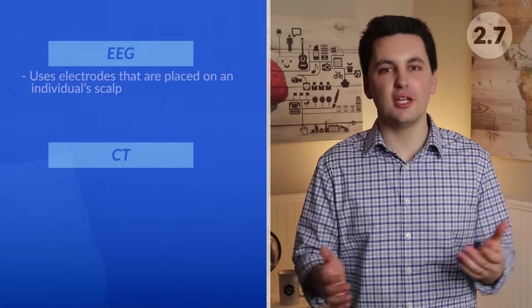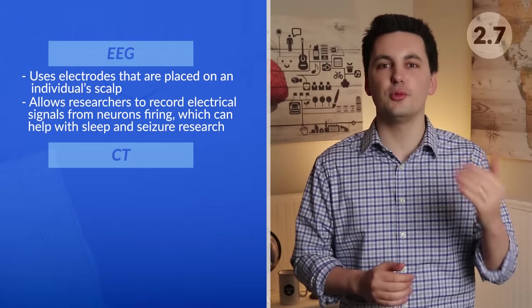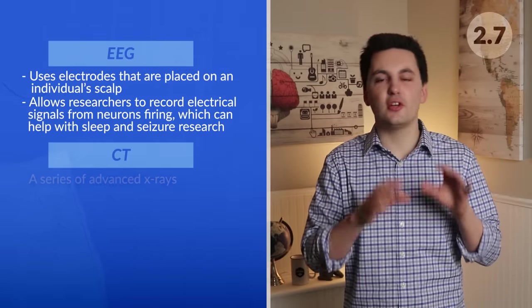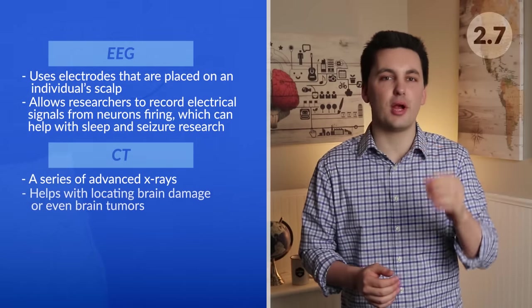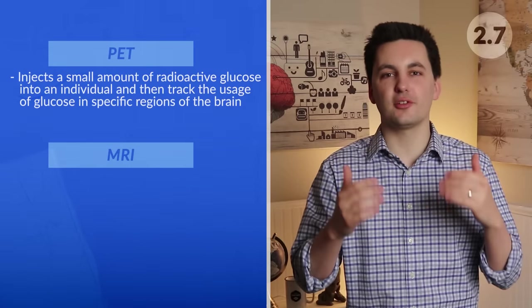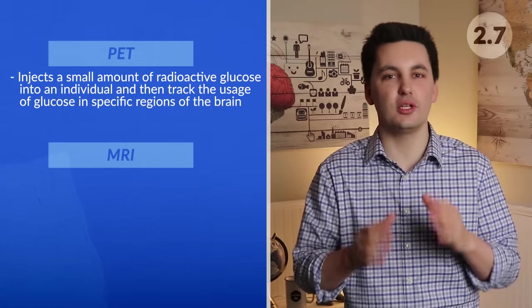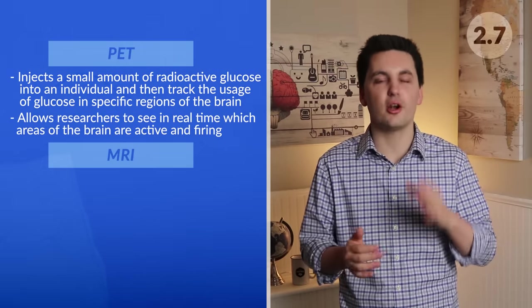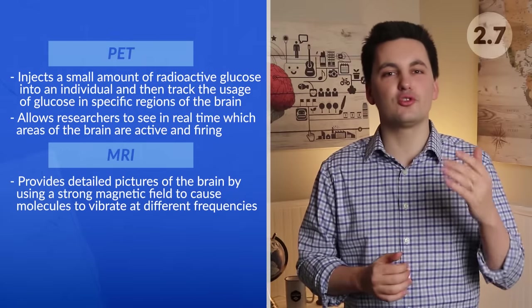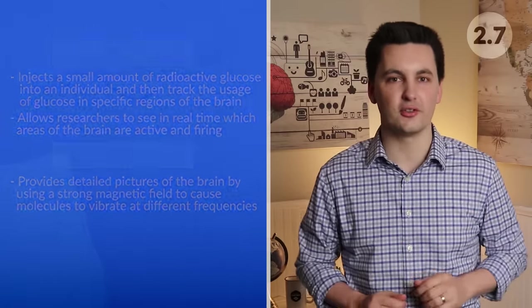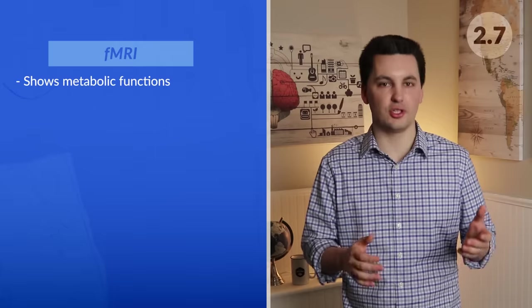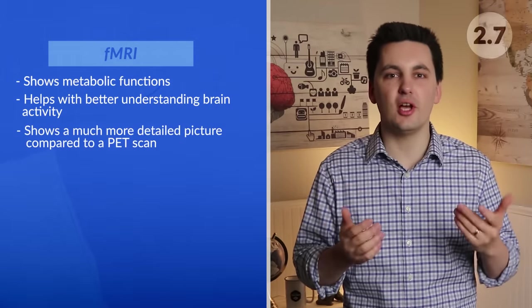The last part of this section is all about different neuroimaging techniques — remember to complete the table in your study guide as I go through each one. EEGs use electrodes placed on an individual's scalp to record electrical signals from neurons firing, which can help with sleep and seizure research. CTs are a series of advanced X-rays that look at the brain and can help locate brain damage or tumors. PET scans involve injecting a small amount of radioactive glucose into an individual and then tracking the glucose in specific regions of the brain, allowing researchers to see in real time which areas of the brain are active and firing. MRIs provide detailed pictures of the brain using a strong magnetic field to cause molecules to vibrate at different frequencies. FMRIs are similar to an MRI but show metabolic functions, helping better understand brain activity with a much more detailed picture compared to a PET scan.